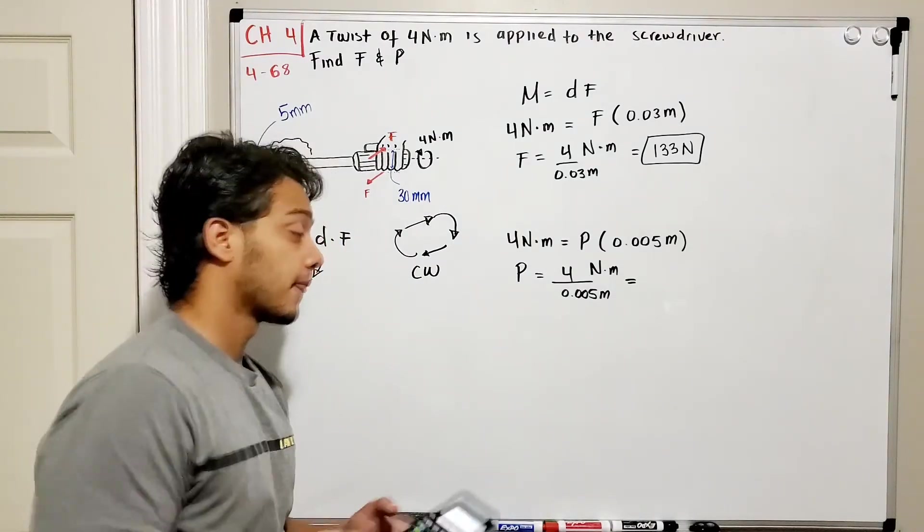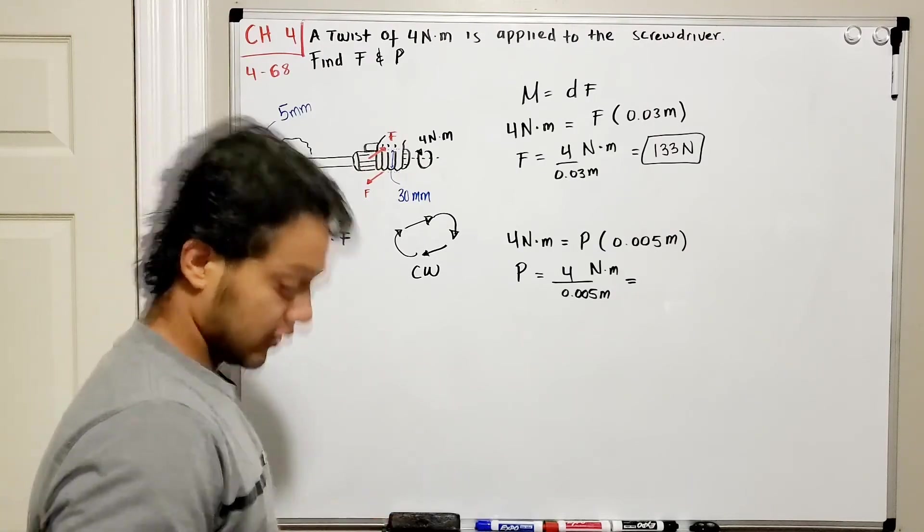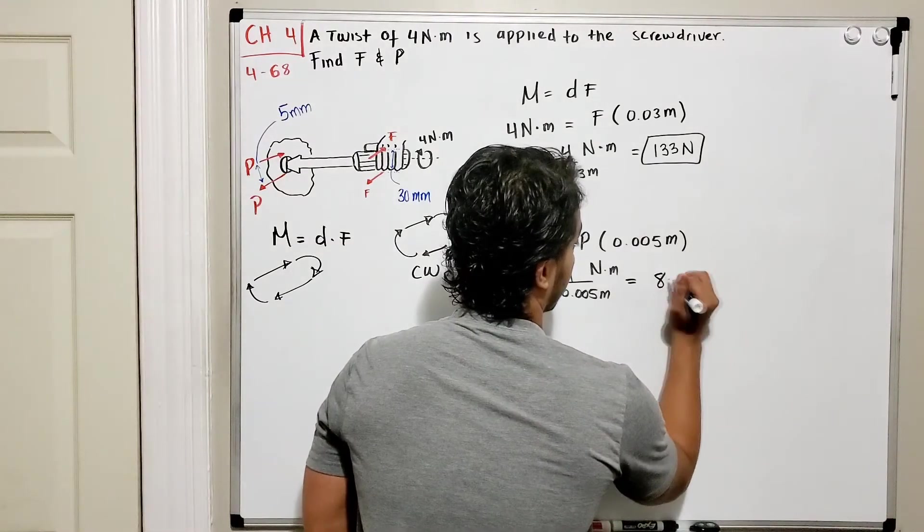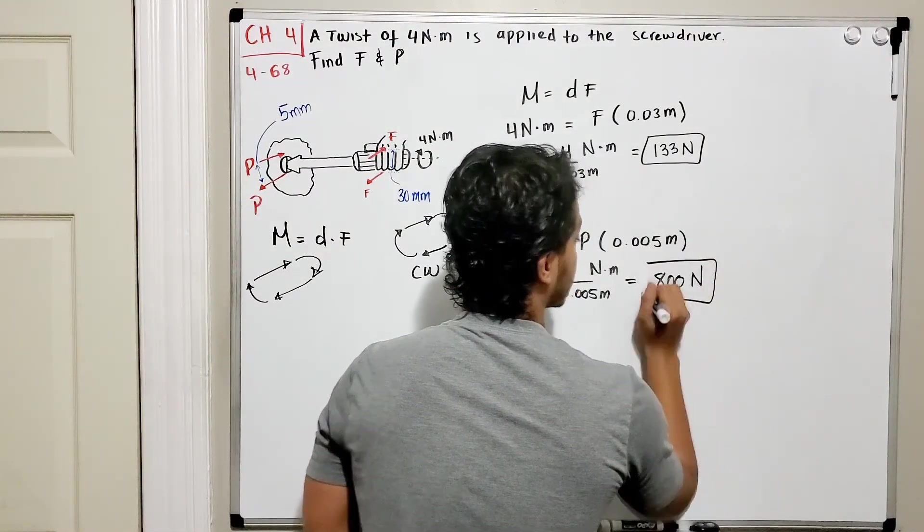So we got 4 divided by 0.005 and it's equal to 800 newtons. So we found our force F and our force P.